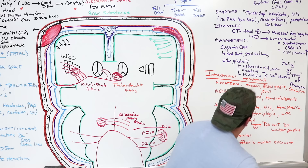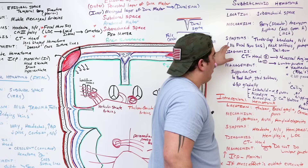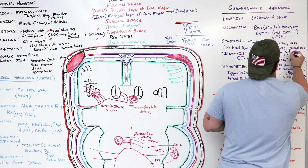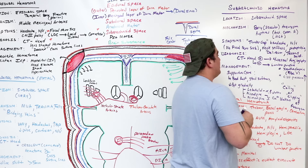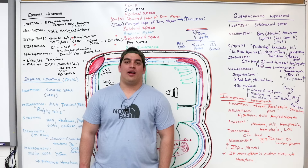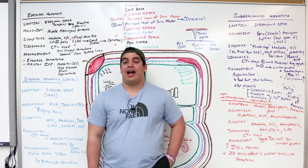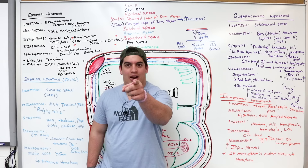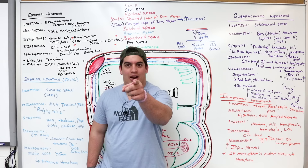One last point: with subarachnoid hemorrhages, when you do ophthalmoscopy and look into the retina, if you see retinal hemorrhaging, this is called Terson's Syndrome — another telltale sign of subarachnoid hematoma. That covers everything you need to know about these intracranial hemorrhages. Please hit like, comment, subscribe, and check out our Instagram, Facebook, and Patreon. Until next time, thank you.